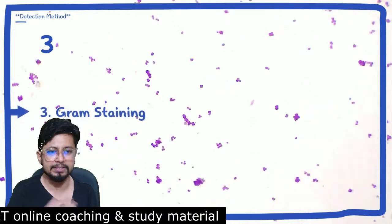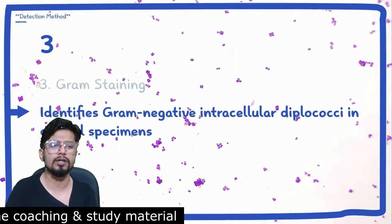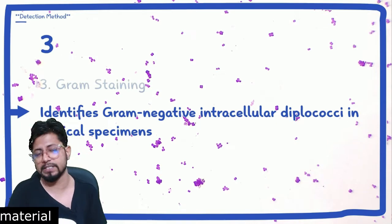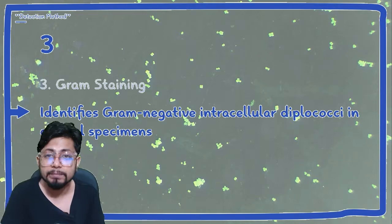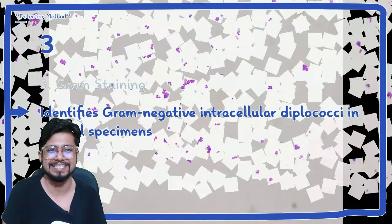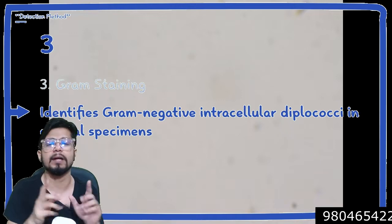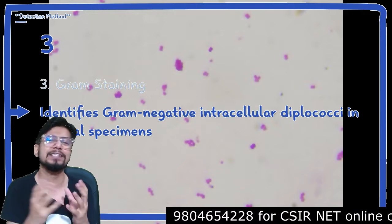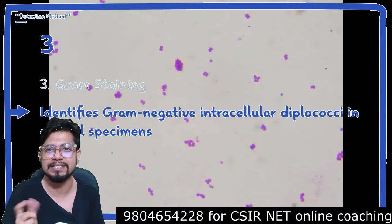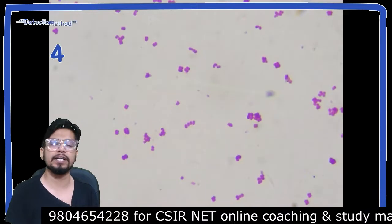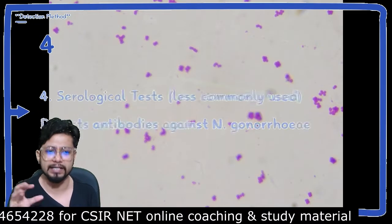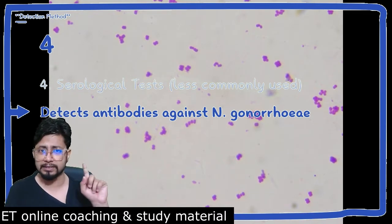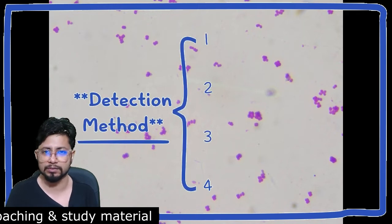The third important detection method is gram staining, but gram staining is not confirmatory. It identifies gram negative intracellular diplococci in clinical specimens — as you may have seen in the microscopic slides shown — giving about 90% confidence that the bacteria is Neisseria gonorrhoeae. The fourth and final method is a serological test, which is very less commonly used and detects antibodies against Neisseria gonorrhoeae. We primarily use gram staining and culture method to detect Neisseria gonorrhoeae.